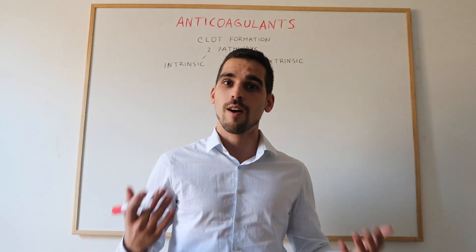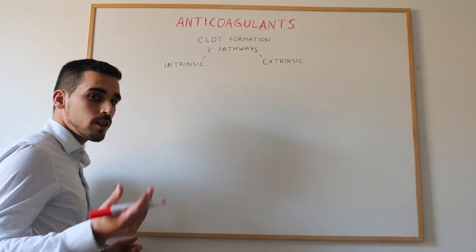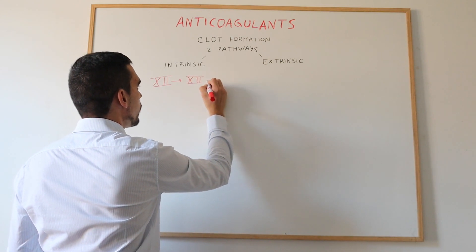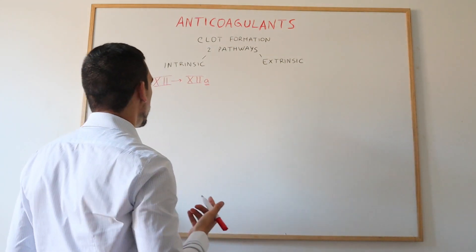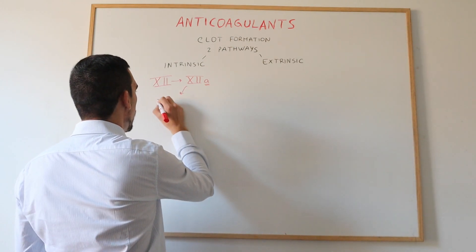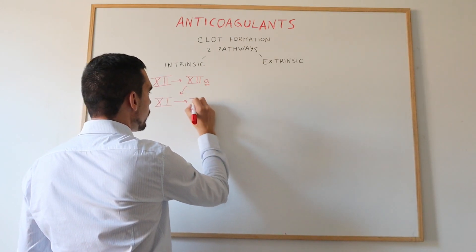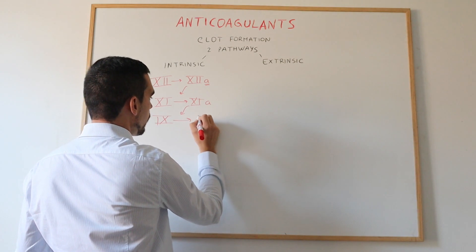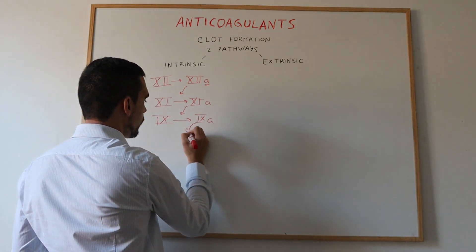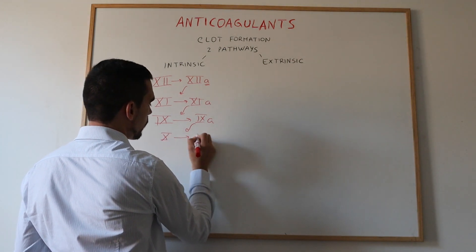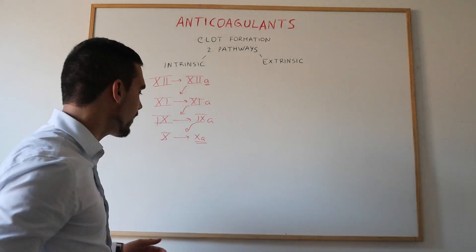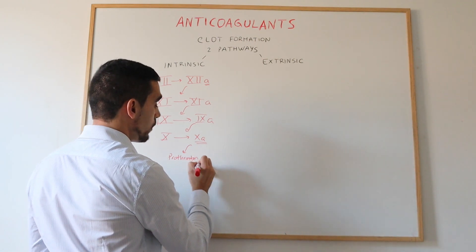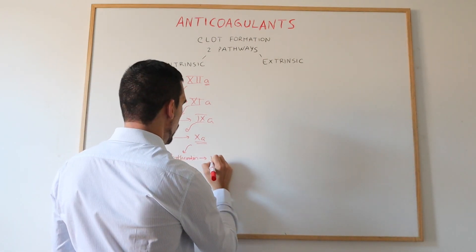The collagen leads to activation of clotting factors. When collagen is released it first activates Factor 12, which becomes activated — 'a' stands for activation of the factor. Factor 12 then activates Factor 11, which activates Factor 9, which in turn activates Factor 10. Factor 10 is then responsible for activating prothrombin, which is Factor 2, into thrombin.